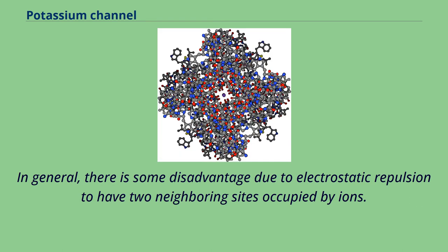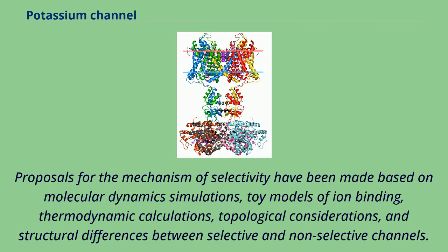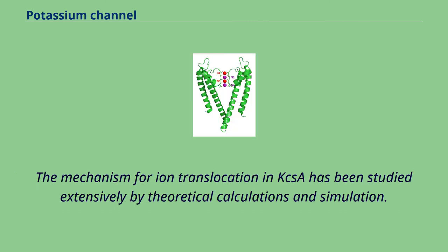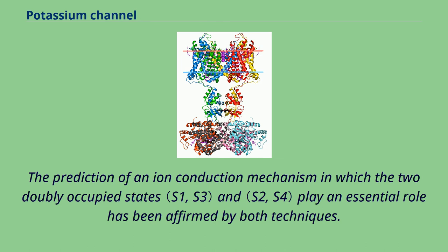In general, there is some disadvantage due to electrostatic repulsion to having two neighboring sites occupied by ions. Proposals for the mechanism of selectivity have been made based on molecular dynamics simulations, toy models of ion binding, thermodynamic calculations, topological considerations, and structural differences between selective and non-selective channels. The mechanism for ion translocation in KcsA has been studied extensively by theoretical calculations and simulation. The prediction of an ion conduction mechanism in which two doubly occupied states play an essential role has been affirmed by both techniques.